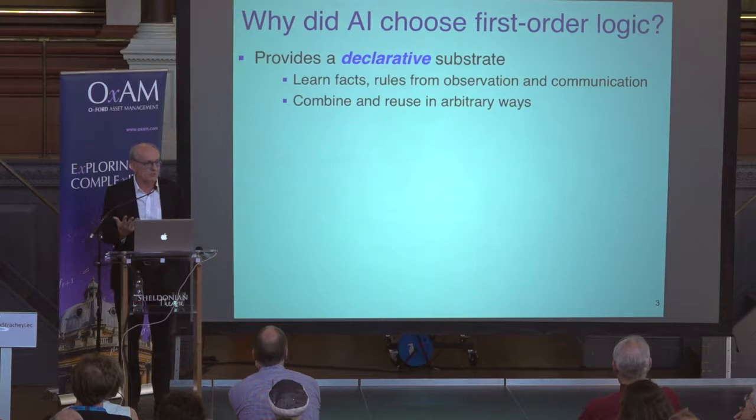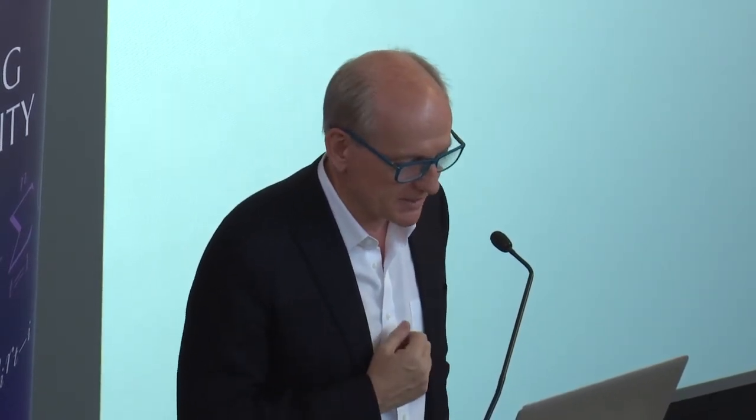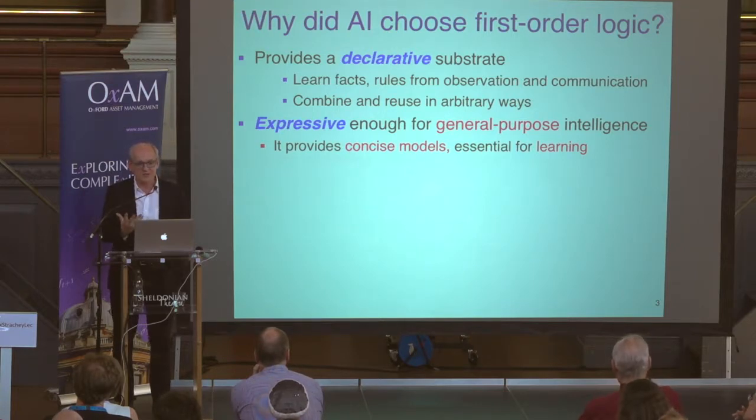So let's look at why first-order logic was chosen by McCarthy and why that choice had such a huge impact on the field. The first reason is that logic provides a declarative substrate. McCarthy's 1958 paper talked about an advice taker — a system you could build simply by telling it the truth, not by writing programs. Its decision making would result from a process of logical reasoning and planning. That was the precursor of the entire database industry. Declarative systems have many advantages in terms of modularity and the ability to combine and reuse information in ways that weren't originally anticipated.